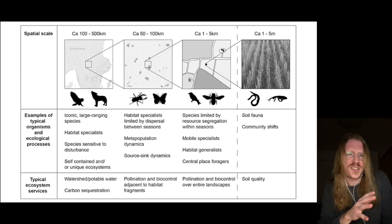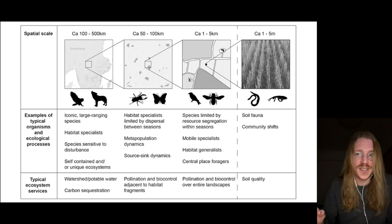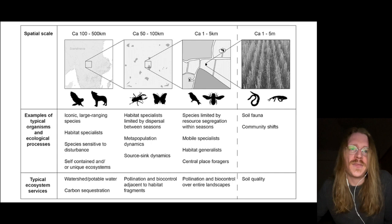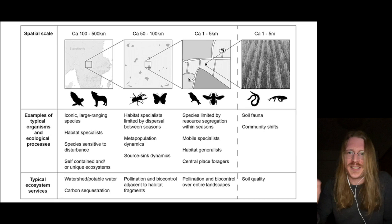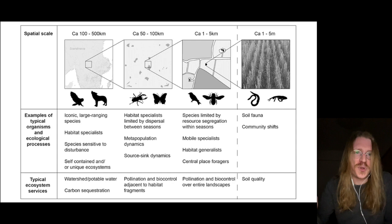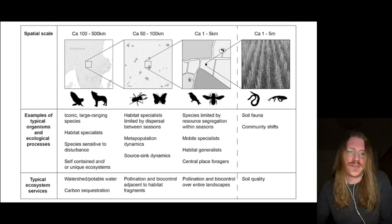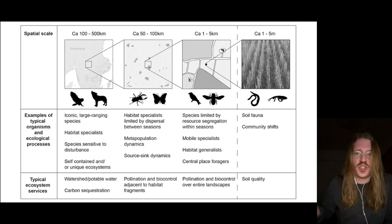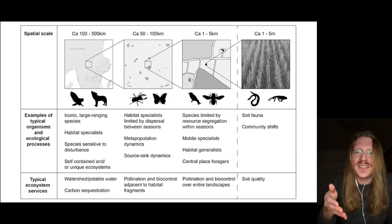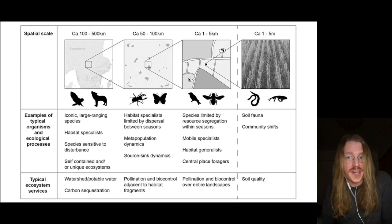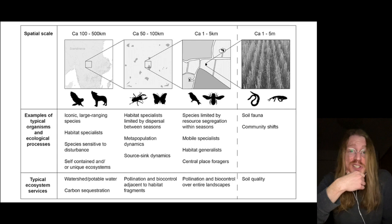Many ecosystem services don't actually operate at the scale of an individual landscape element. Water purification and carbon sequestration happen at a geographic scale, and pollination happens across landscapes. Whether an organism is a generalist or specialist, whether it's sensitive to disturbances — all of this is linked to spatial scale, and the same goes for population dynamics. Think source-sink or island biogeography theory. Spatial context is really important.